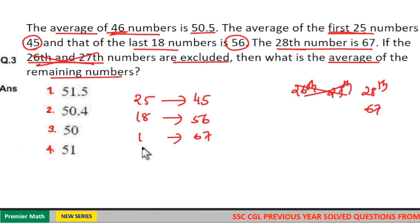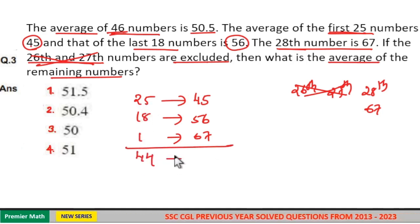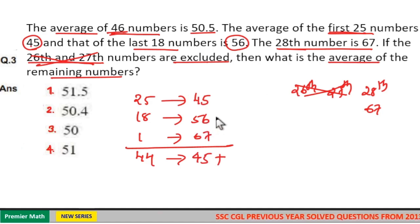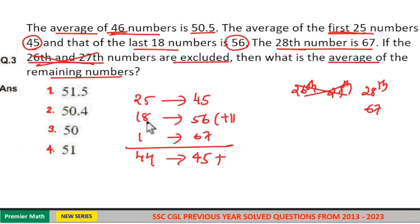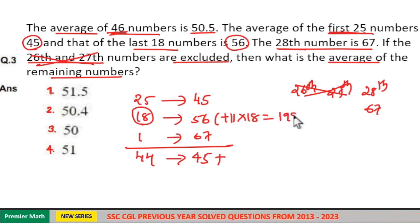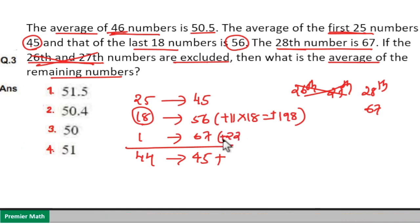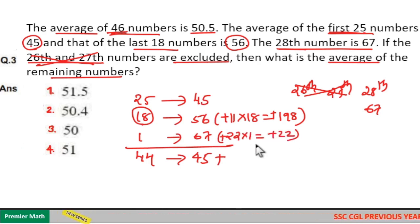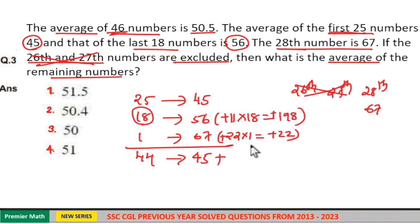Since the 26th and 27th numbers are excluded, the remaining numbers are 25 plus 19, which equals 44. Taking a common average of 45, the last 18 numbers at 56 are 11 greater than 45, so the total increment is 11 times 18, which equals 198. The 28th number, 67, is 22 greater than 45, giving a total increment of 22. Overall increment is 198 plus 22, which is 220.